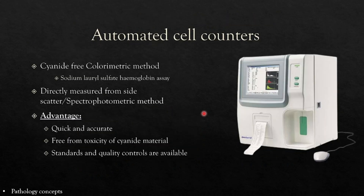Automated cell counters use different techniques to measure hemoglobin, such as the cyanmethemoglobin method, the cyanide-free colorimetric method (sodium lauryl sulfate hemoglobin assay), or direct measurement from side scatter or spectrophotometric methods. Advantages include being quick and accurate, free from toxicity when cyanide-free methods are used, and having available standards and quality controls.